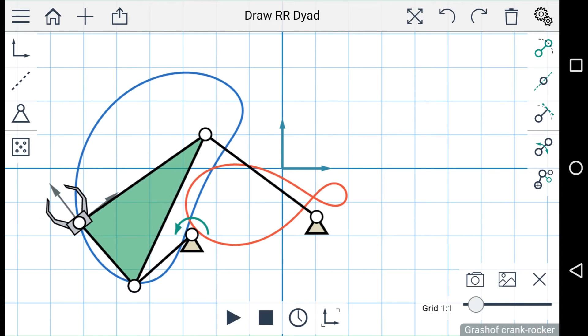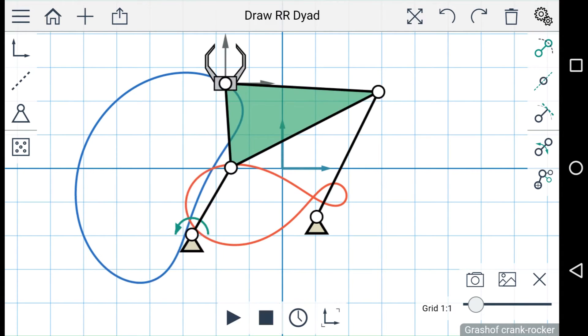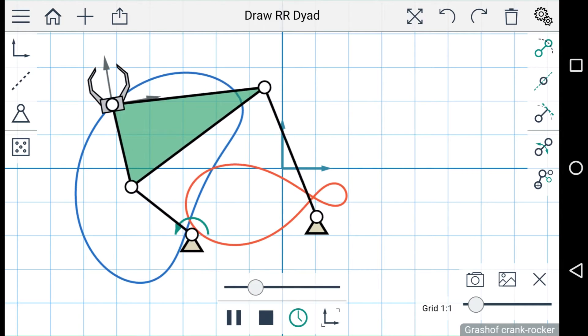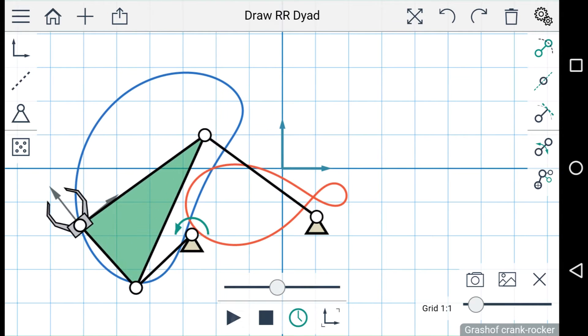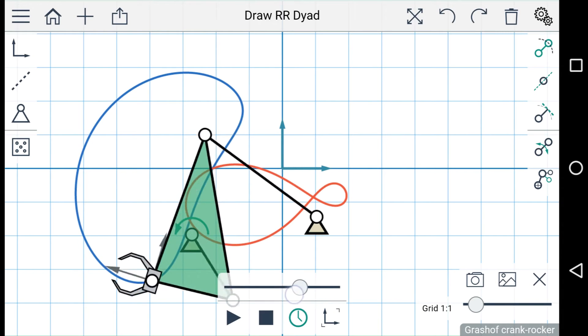You can pause and continue playing the animation, or you can press stop to reset the linkage to its original position. You can view the timeline of the animation, and you can drag the slider back and forth to set the position of the linkage.